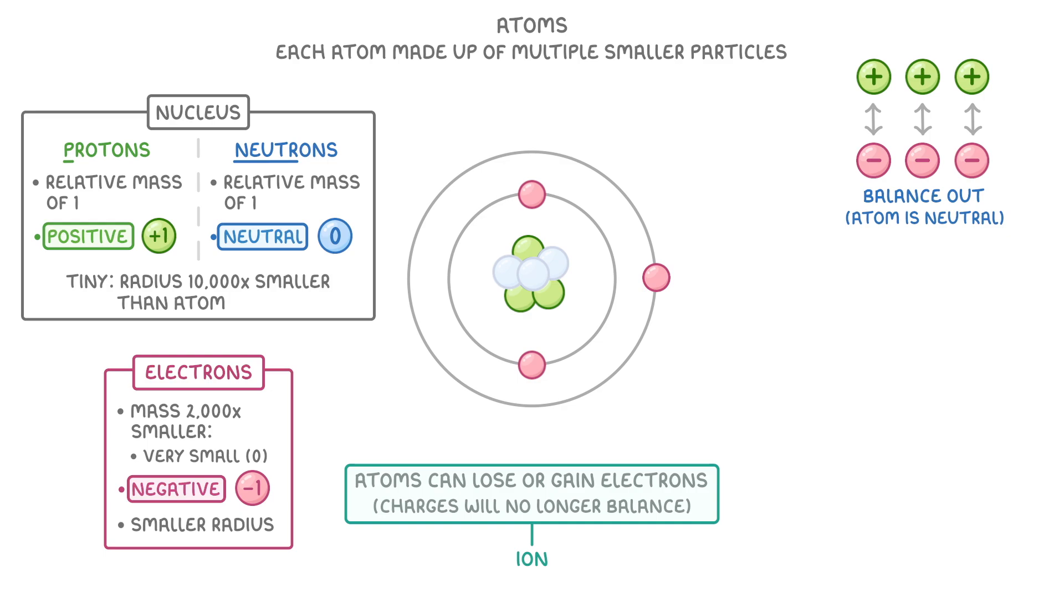For example, if we gave our atom an extra electron, we'd still have three protons but four electrons, and so the charges would no longer balance. And it would now be a negative ion because there's more negative electrons than positive protons. We'd call this a one minus negative ion because it only has one extra electron.